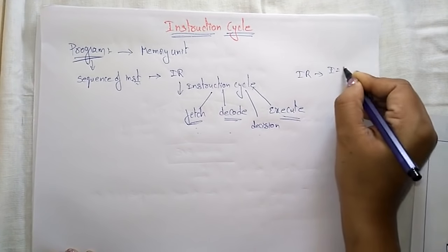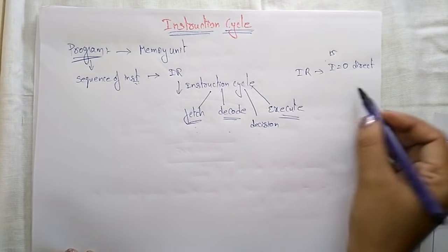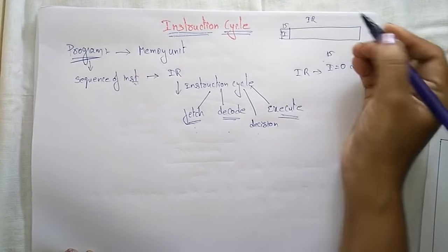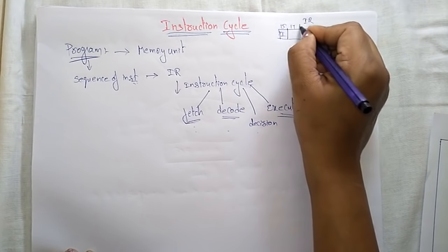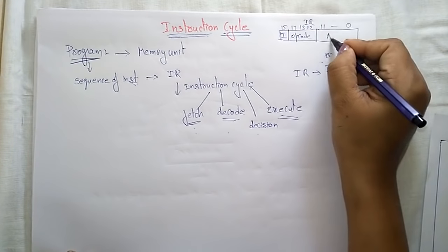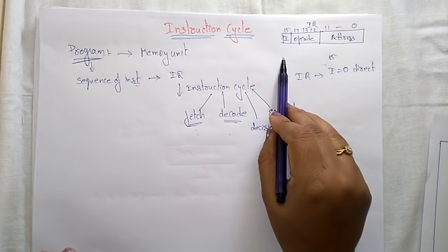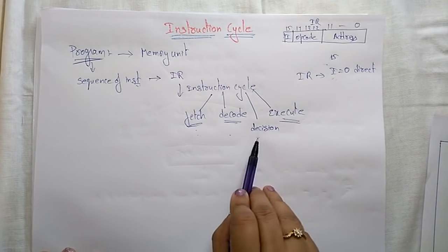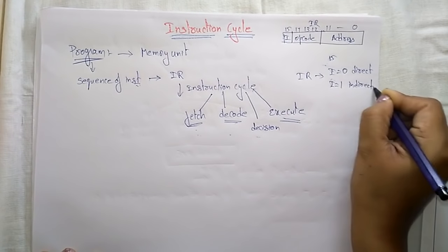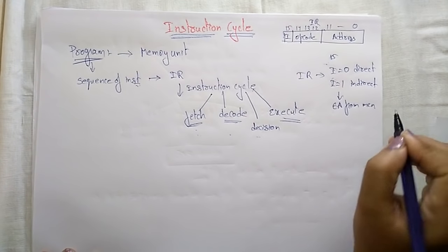In the instruction register, if I is zero it indicates direct addressing. I is the 15th bit in the instruction register. Bits 14, 13, 12 indicate the opcode — the operation to be performed. Bits 11 to 0 hold the address. If I is zero, there is no need to go for the effective address decision; it directly executes the instruction. If I is one, it means indirect addressing mode.